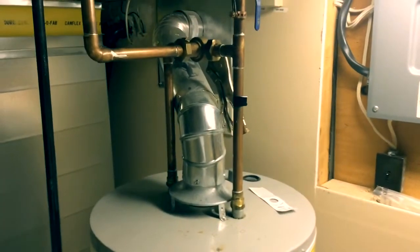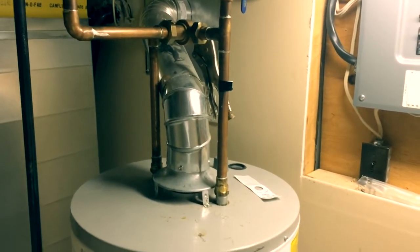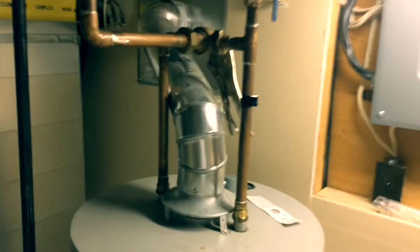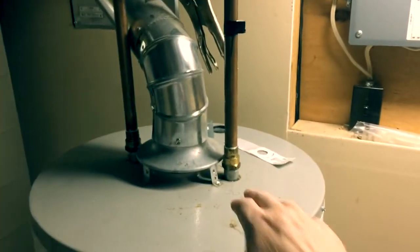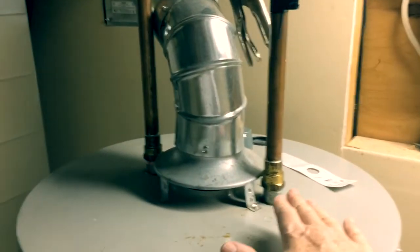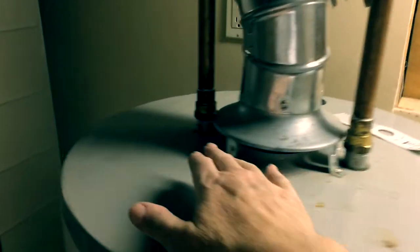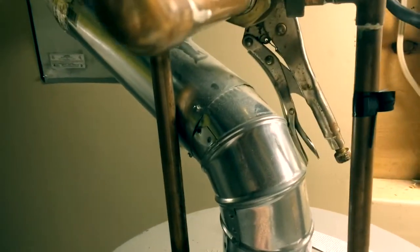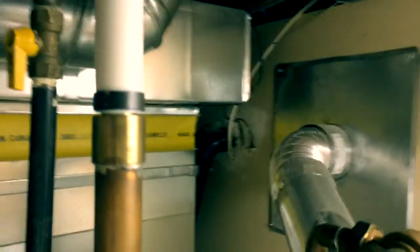Now, how a hot water tank generally works is cold water comes down one of these two pipes. In this case, it's this one. Cold water comes down into this tank, fills up this tank, and the water pressure from the water system pressurizes the tank. The tank heats the water. The hot water exits on the other side. Hot comes up and goes into your water supply piping in your house.